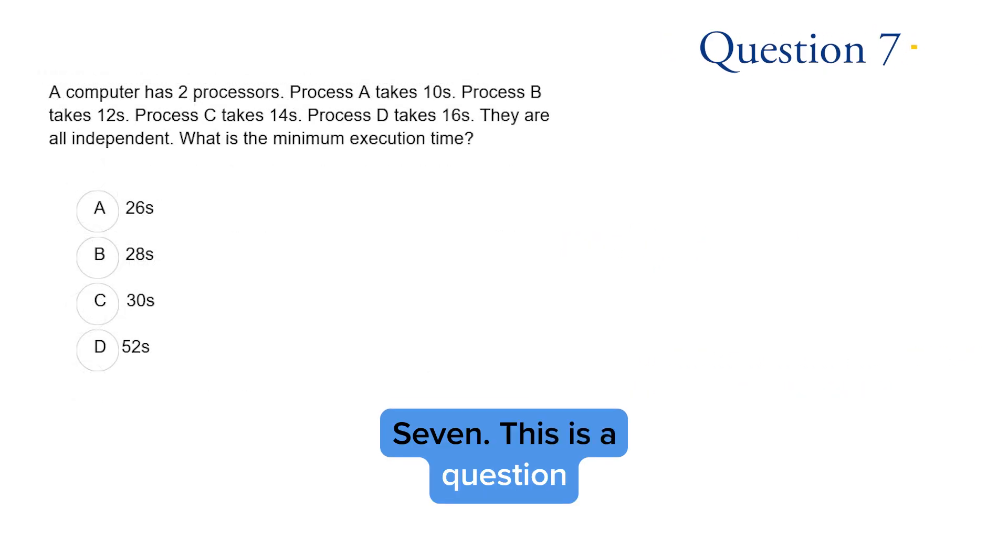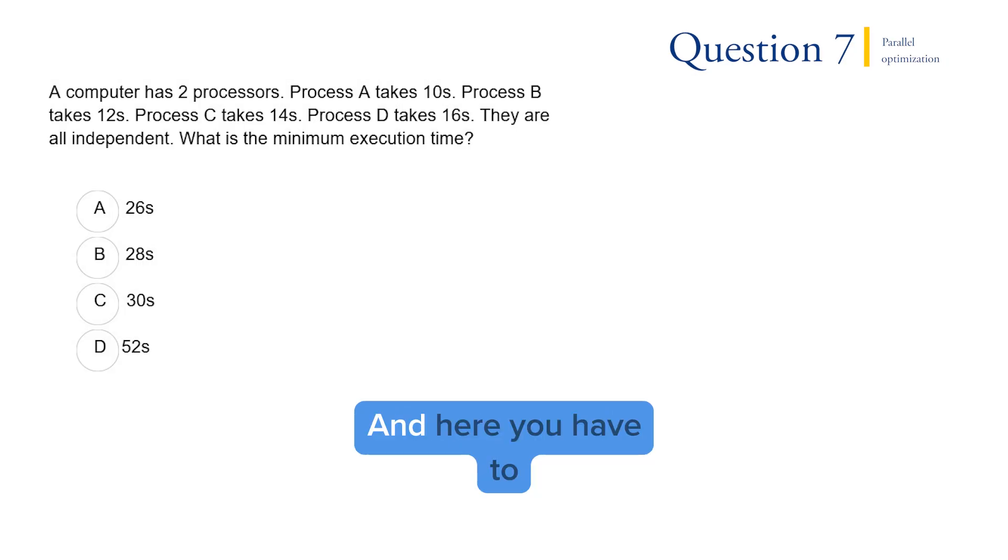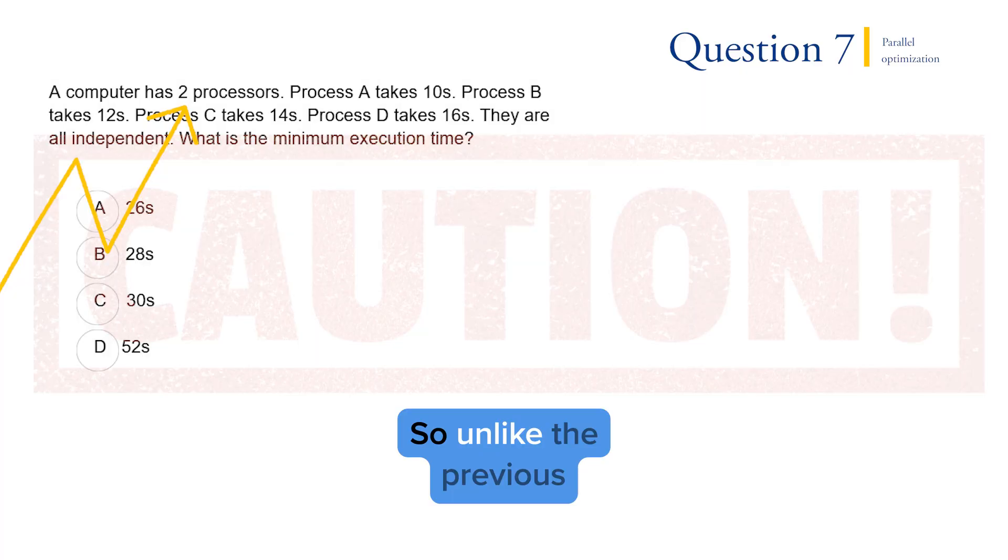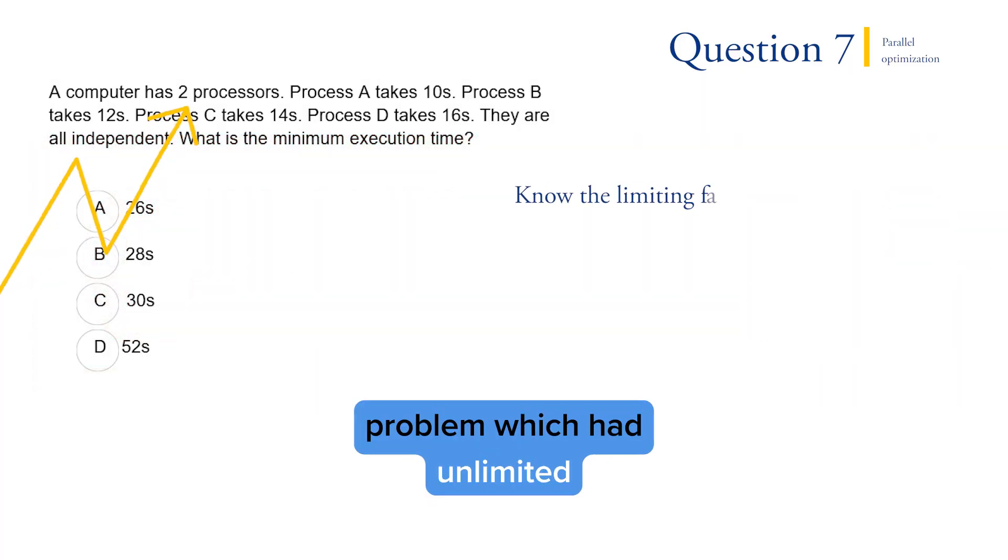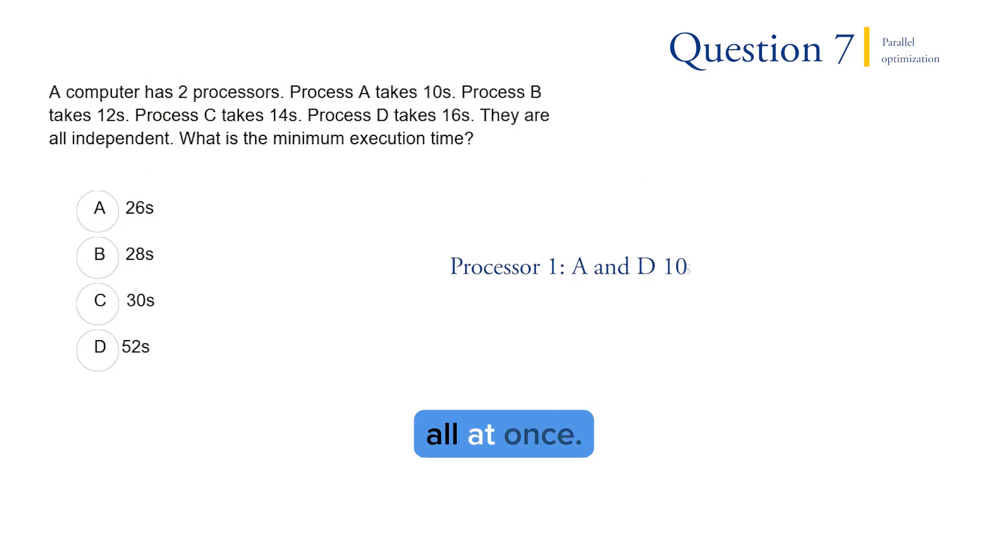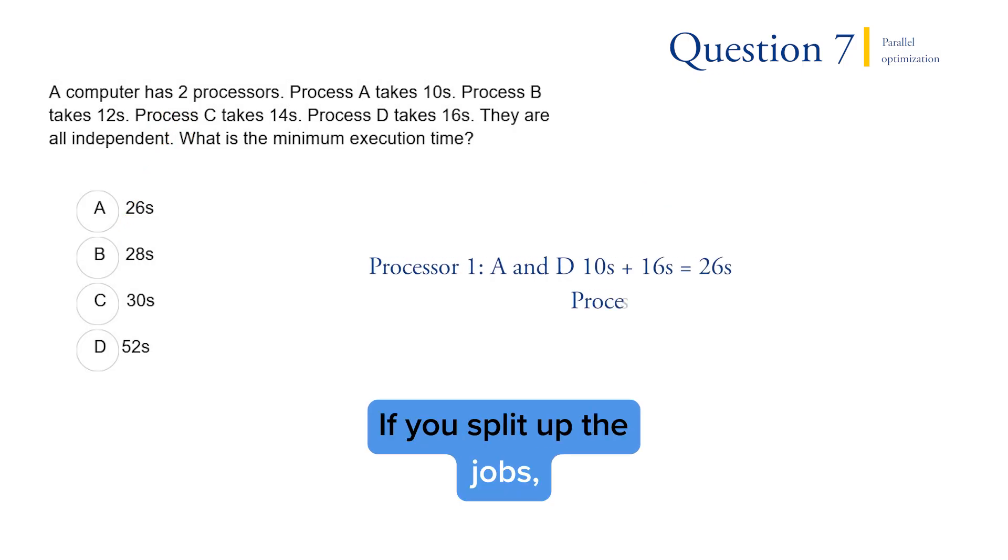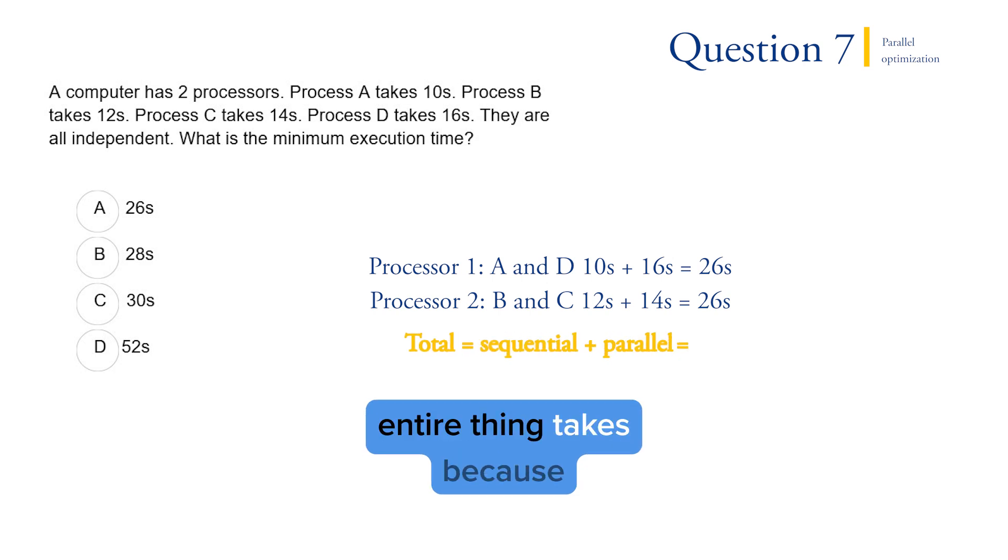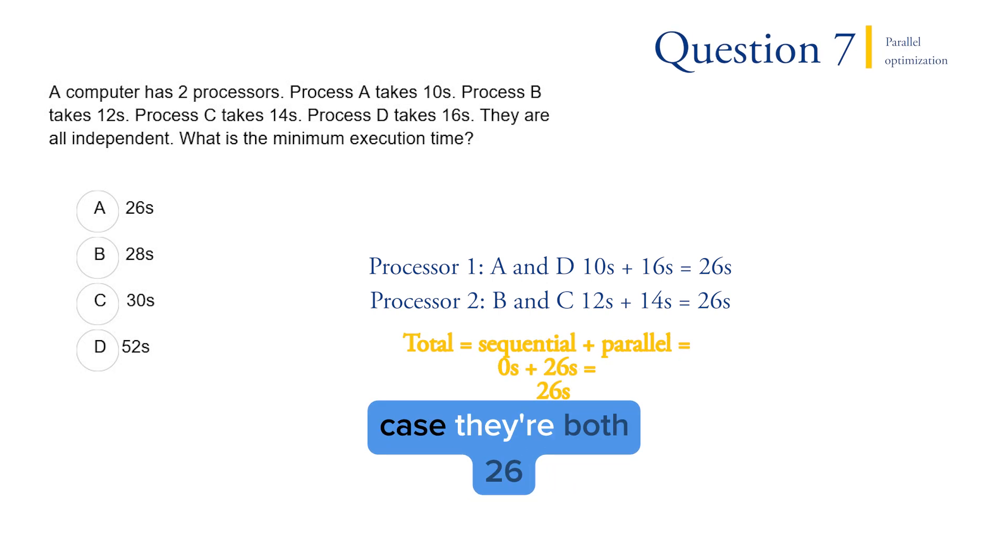Question seven. This is a question about parallel optimization. In here, you have to be careful and pay attention to how many processors you have. So unlike the previous problem, which had unlimited processors, here we are limited to two. So you can't run everything all at once. If you split up the jobs as we've shown here, this is a configuration that gives you the minimum or least time. You'll see that both processors take 26 seconds to do these two jobs. So that's how long the entire thing takes, because again, with parallel, you're limited by the slowest. But in this case, they're both 26 seconds.